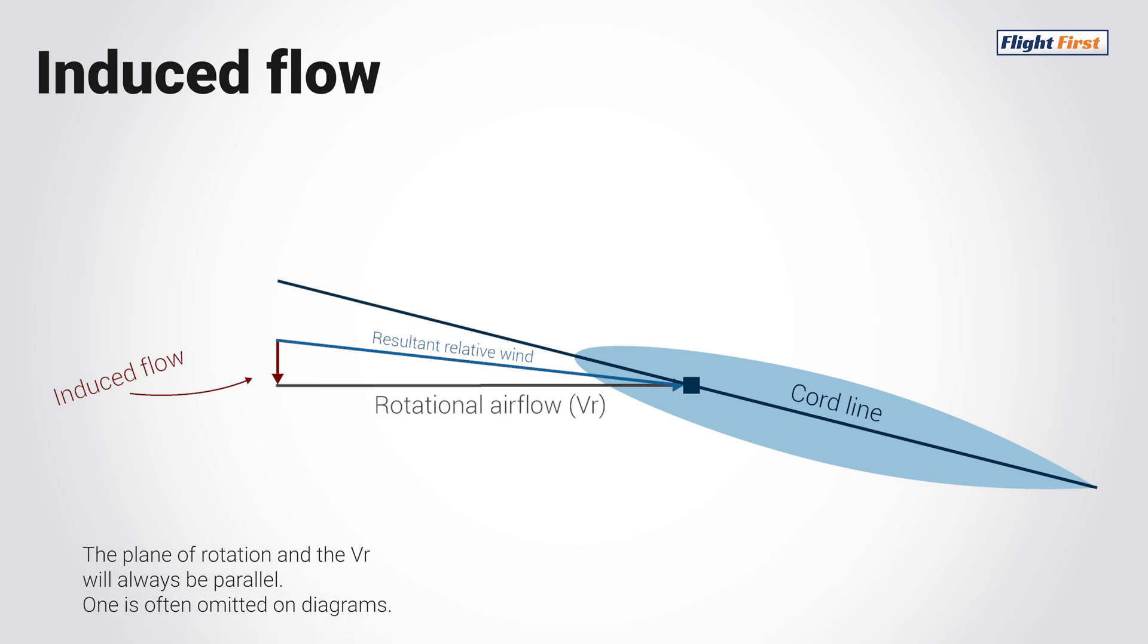Think of the relative wind as a purely horizontal component. The induced flow in a hover is solely going to be a vertical component. We're going to experience the most induced flow in the hover, and as we push the cyclic forward to get forward airspeed, the induced flow is going to gradually lessen.